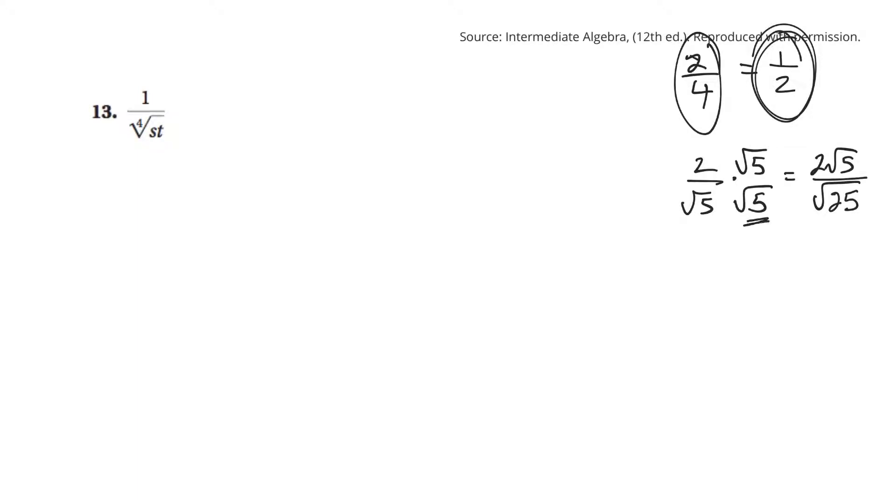And I multiplied it by this so that this would be perfect. A perfect square number. And so, the square root of 25 is just plain 5. Now, there's no radical on the bottom.